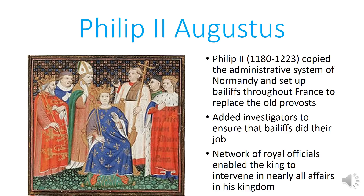Philip recognized that the Norman system was superior and copied it. He set up bailiffs throughout France to replace the old and ineffective provosts — called seneschals in the south, but the same basic thing. To ensure effectiveness across his larger realm, he added investigators who sent reports to the crown about how well the bailiffs were regulating the nobles and enforcing the king's writ. With this network of royal officials, Philip could actually intervene in most affairs of his kingdom and govern effectively. France was now moving in the opposite direction from the Holy Roman Empire.